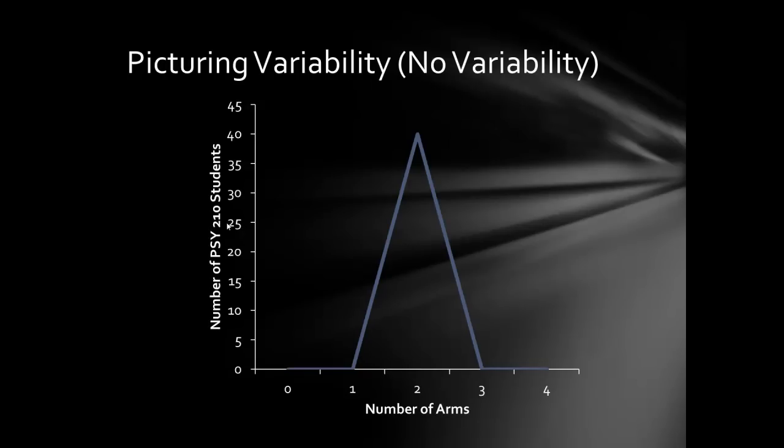Here's an example of a distribution that has no variability whatsoever. If I took a sample of my students in Psych 210 and asked how many arms do you have, pretty much everybody would say two. In a situation where there's no variability, all the scores are the same, so any measure of variability would be zero.